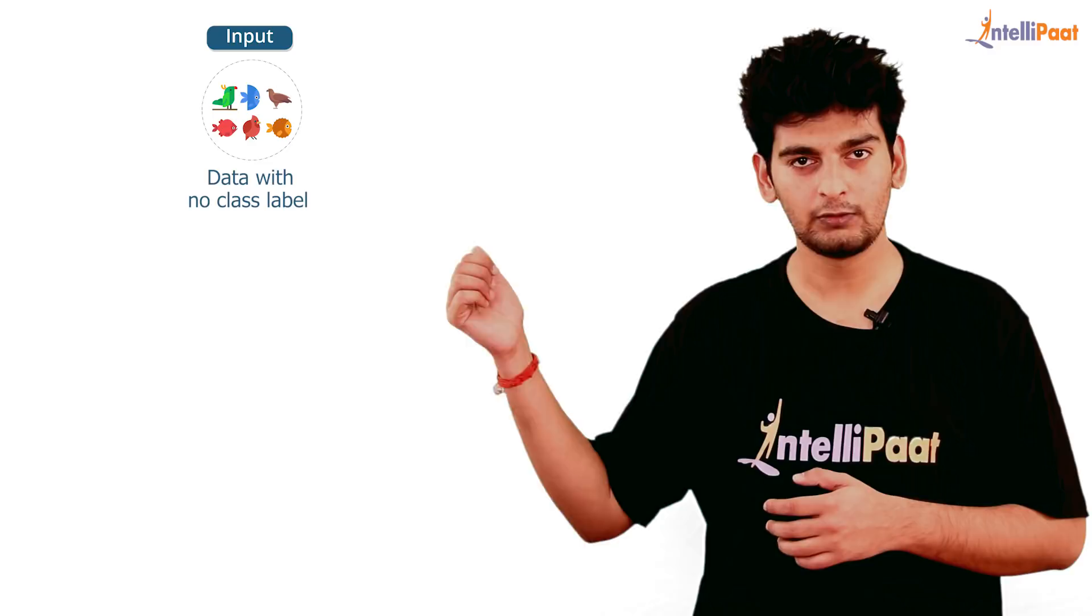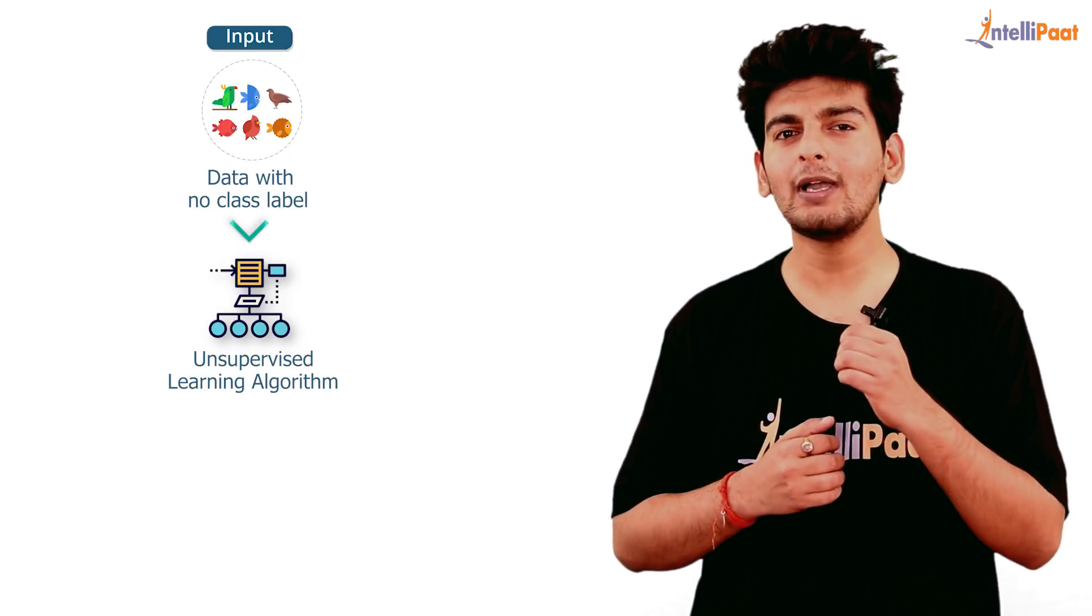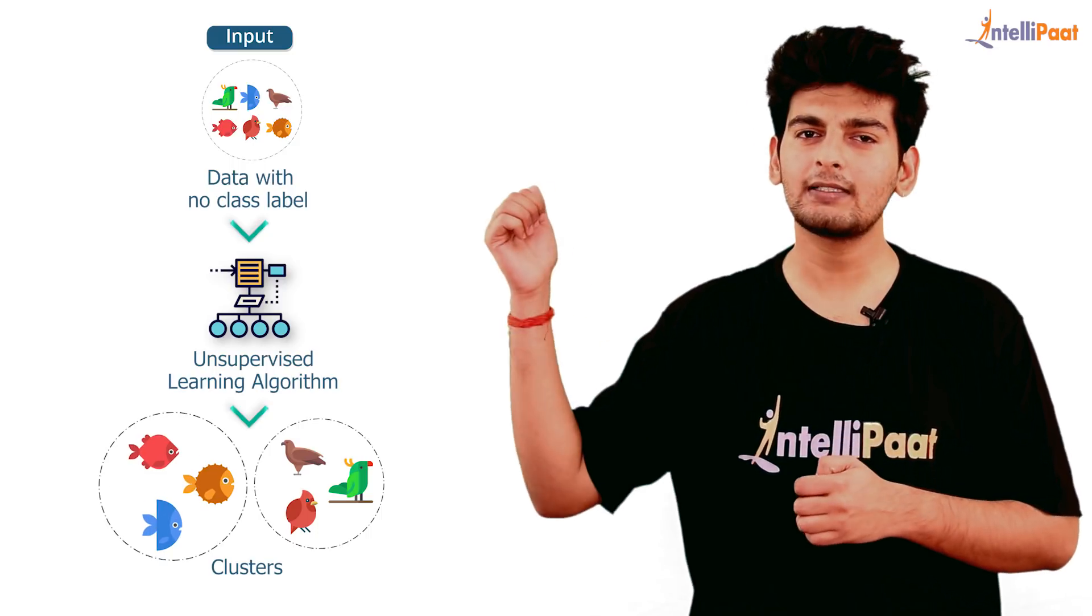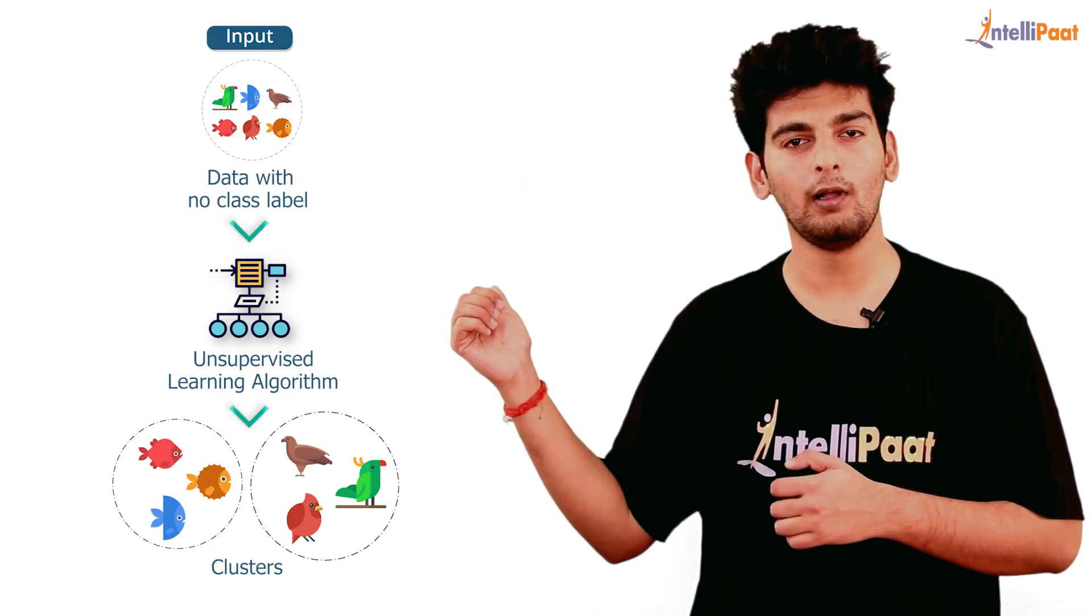So let's take this example over here. So we have this input data with no class labels, and this input data comprises of fish and birds. Now I'll take this input data and I'll build an unsupervised learning model on top of this input data. So this will give me two clusters. So the first cluster comprises of all the fish and the second cluster comprises of all the birds.